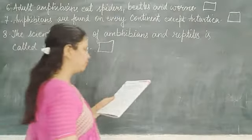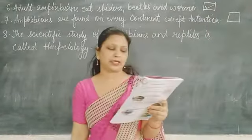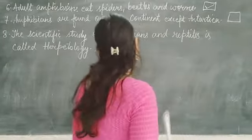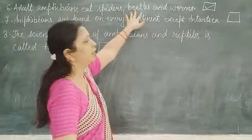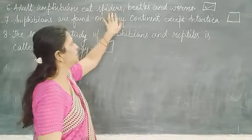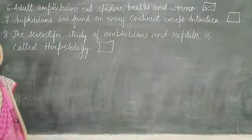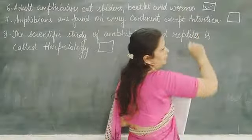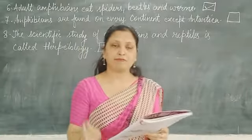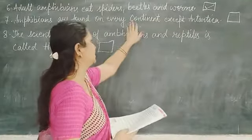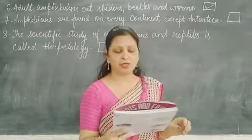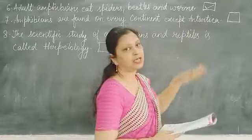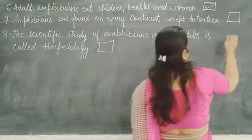Adult amphibians eat smaller animals and smaller insects — frogs and salamanders eat insects. The seventh point is: amphibians are found on every continent except Antarctica. Yes, amphibians are found on each and every continent. They live in a variety of habitats ranging from forests to deserts, but not in Antarctica. This is correct.